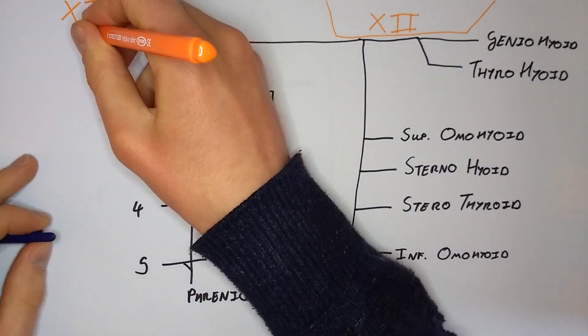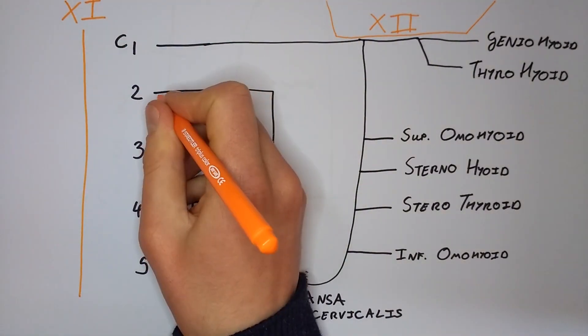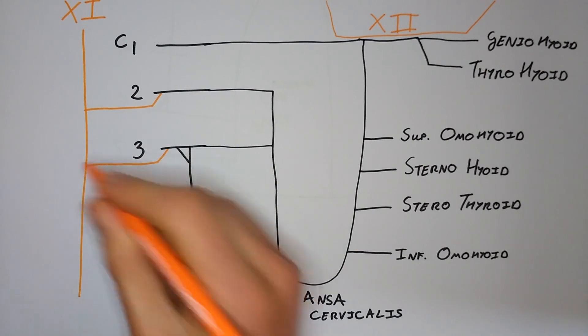Next we'll draw cranial nerve 11, the accessory nerve, which receives spinal contributions from C2, 3 and 4.